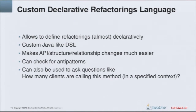Now let me talk about the NetBeans language for declarative refactorings. As the name suggests, it allows us to declare the refactorings in a declarative way — or more precisely, almost declarative way. We can fall back into Java if we need to. The language is similar to Java in some aspects, or embeds parts that are very similar to Java. We can do some API changes with it much simpler and change code structure in some cases.